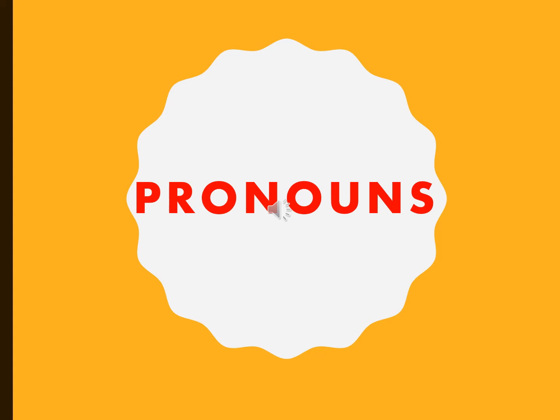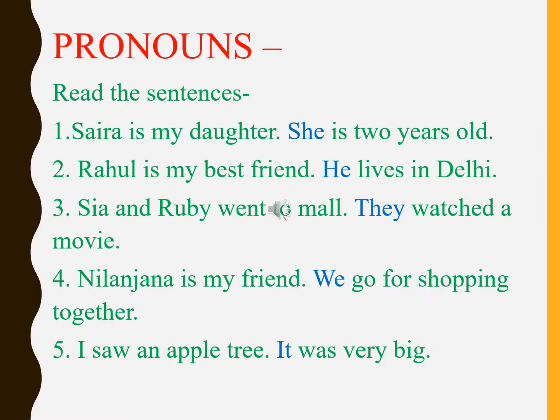Let us see a few examples. Number one: Sarah is my daughter. She is two years old. Now here the noun is Sarah, and Sarah is a girl, that is a female gender. For females, that is girls, the pronoun that we use is 'she'. So we will not write 'Sarah is two years old' again — the noun Sarah, being a girl, will be replaced by the pronoun 'she'.